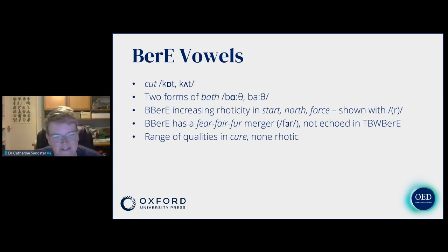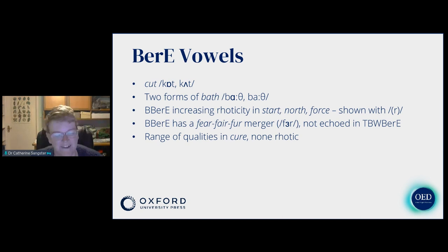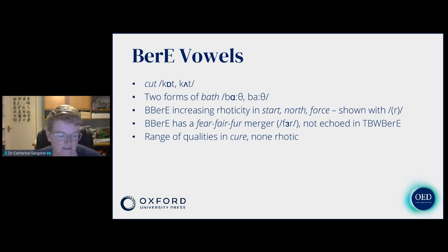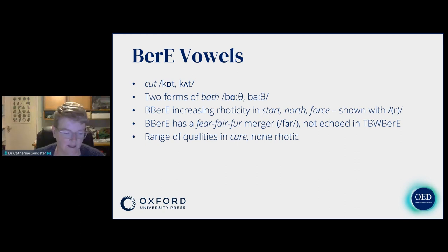The vowel system is fairly complex. For the vowel in the word cut, the rounding is quite minimal. For the bath vowel, we have two forms — both quite long, one further back and one more in the front. Older Black Bermudian English speakers tend to use the more back quality, while younger Black Bermudian English speakers and traditional basilect or White Bermudian English speakers tend to use the other form. There's also some rhoticity — rhoticity is to do with R sounds after vowels. There's increasing rhoticity in Black Bermudian English, which Rosie observed, and it's starting to affect the vowels in words like start, north, force, and is affecting some mergers in progress.